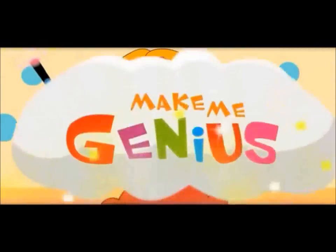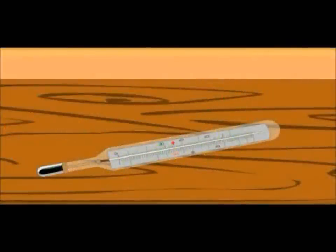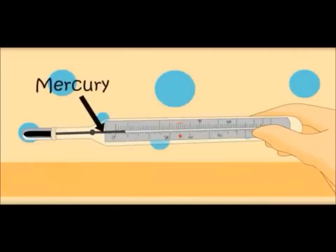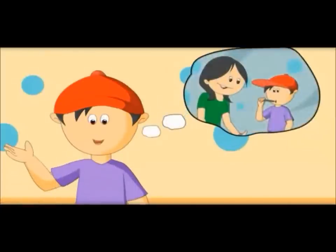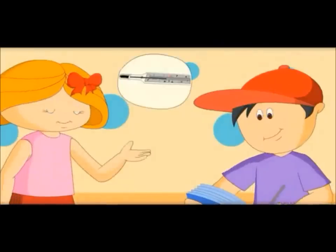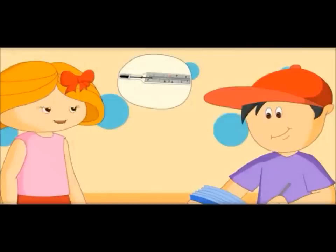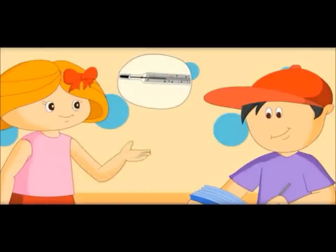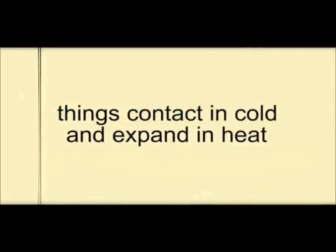I want to show one instrument for measuring temperature. What is inside this tube? It is mercury, a liquid which expands and contracts very fast. That is why Mama uses it to measure body temperature. Yes, if your body is cold, it would contract, and if it is hot, mercury would expand. In this way, we can measure temperature.